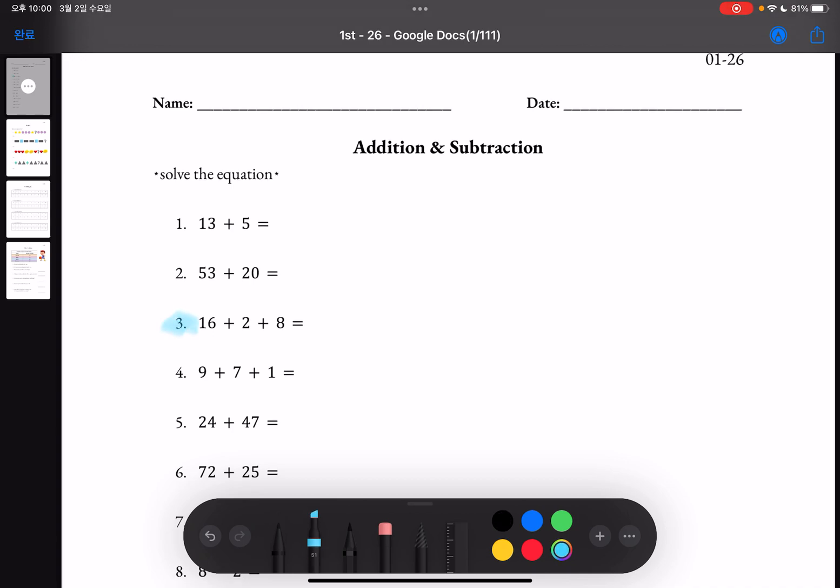Number three is not just addition but it's actually a three number addition, so you would have to add three numbers instead of two. The way you can do this is using a step method, so you will start with 16 and add 2.